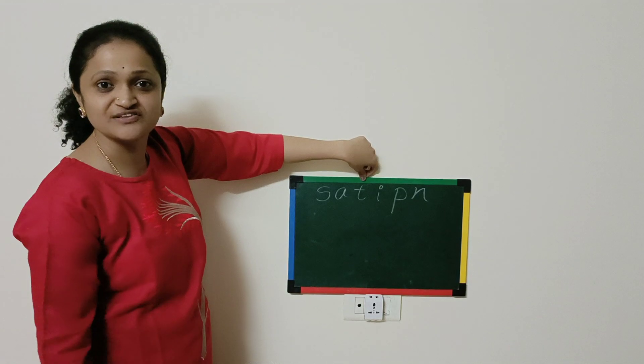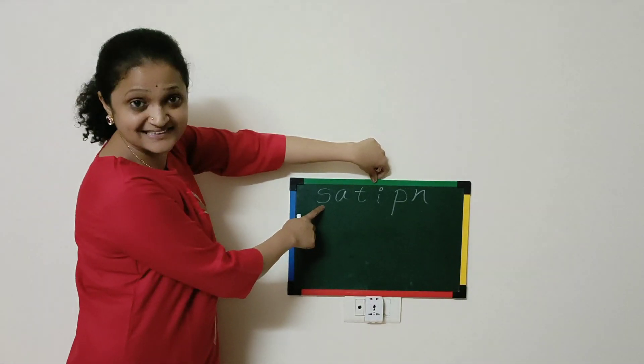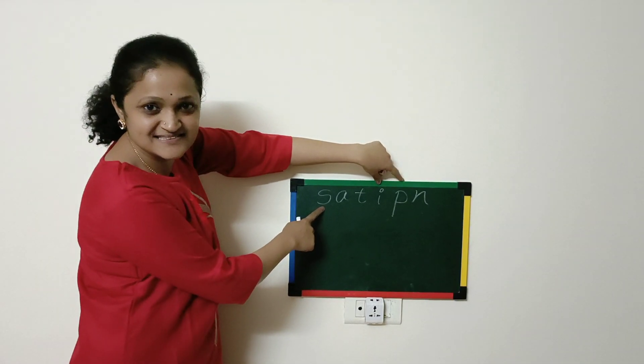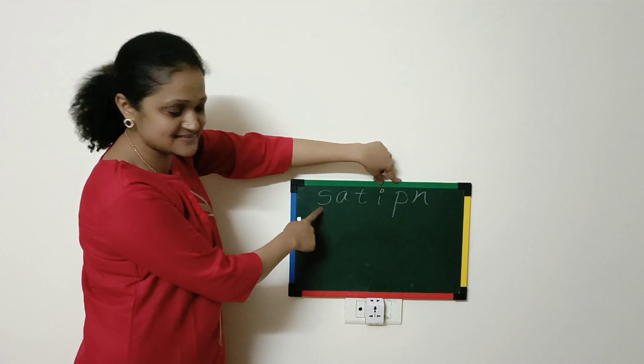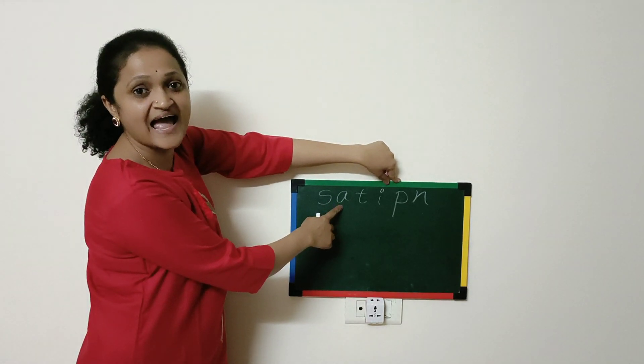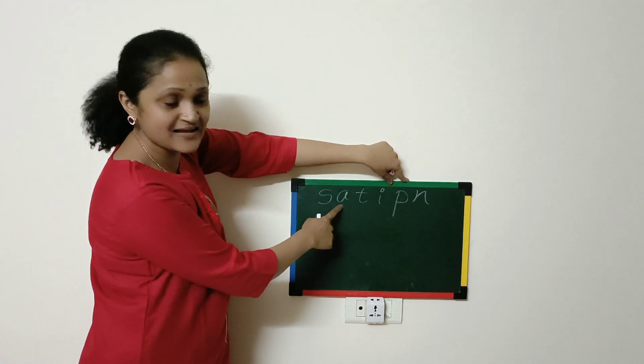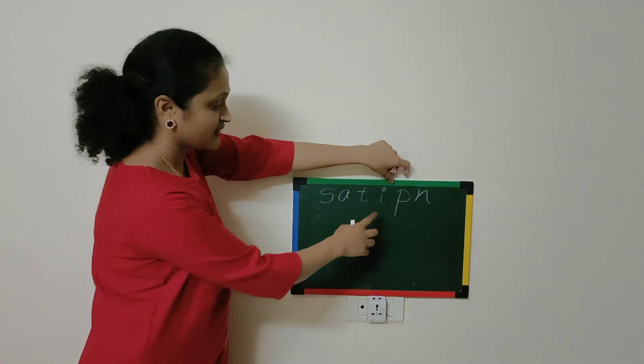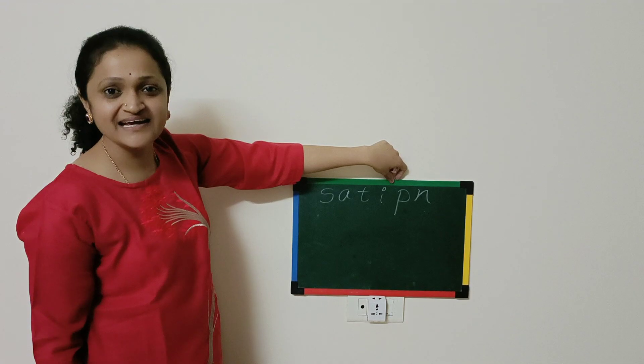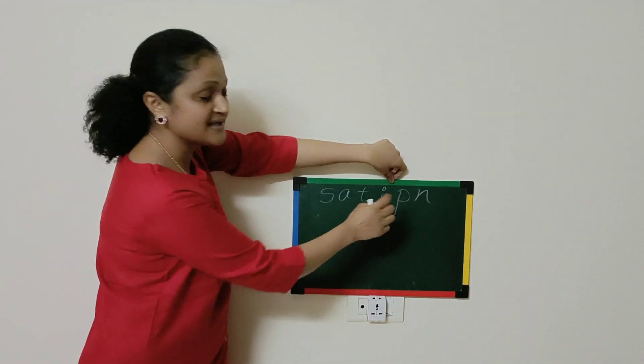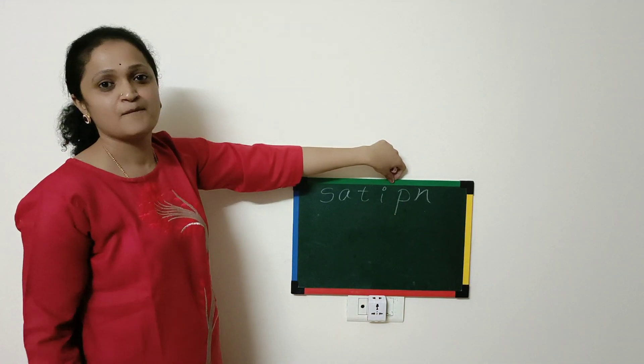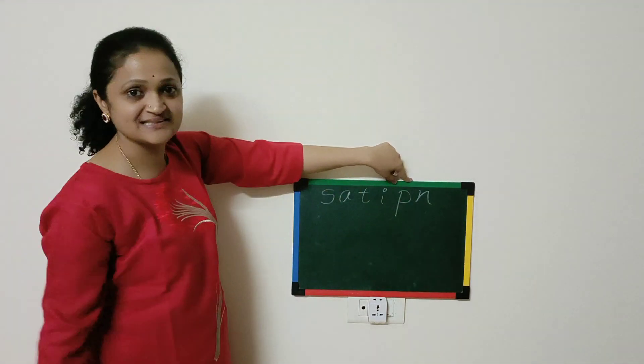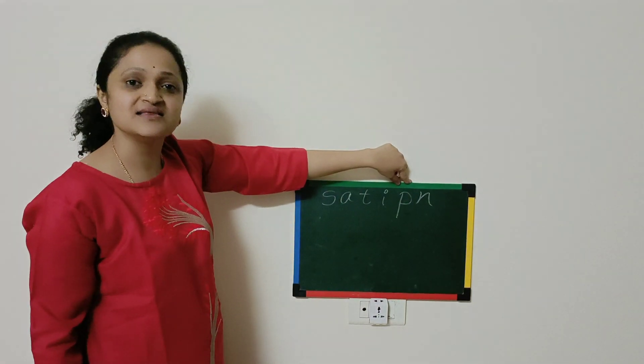Let us revise the sounds of these letters. S says S, A sound is A, T sound is T, I sound is I, P sound is P, N sound is N.